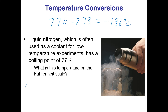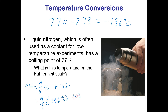Then we convert to Fahrenheit using the formula: degrees Fahrenheit equals nine-fifths of degrees Celsius plus 32. We take nine-fifths of negative 196 degrees Celsius and add 32. Put this in your calculator — take 9 divided by 5, times negative 196, then add 32. You should come up with negative 320 degrees Fahrenheit.